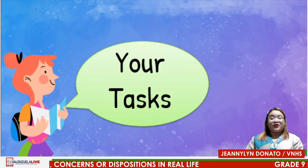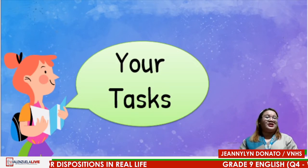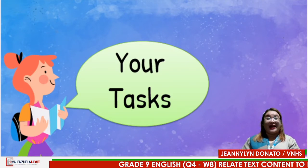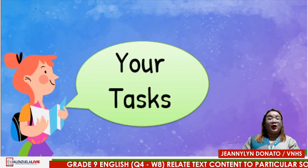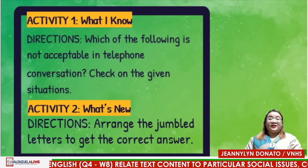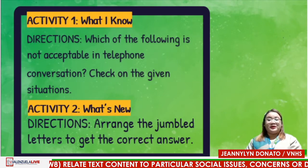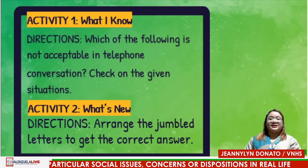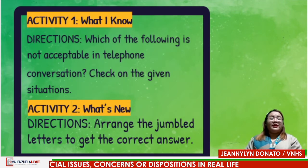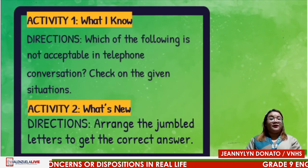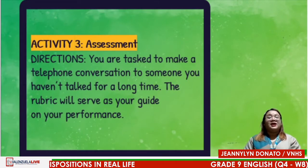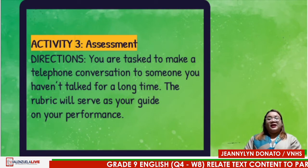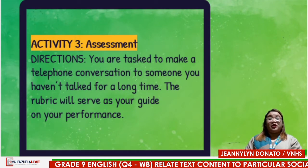Thank you so much for actively participating in our question and answer portion. I am positive that you will be able to complete the succeeding tasks in your learning packets. Allow me to give you a quick walkthrough on your activities. For Task 1, 'What I Know,' you're going to read a telephone conversation and identify which parts are acceptable and not acceptable. For Task 2, 'What's New,' you're going to arrange jumbled words to get the correct answer. And for the last activity, the assessment, you are tasked to make a telephone conversation to someone you haven't talked to for a long time — the rubric will serve as your guide.